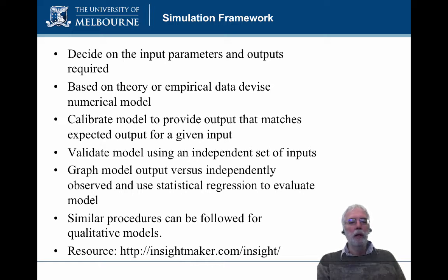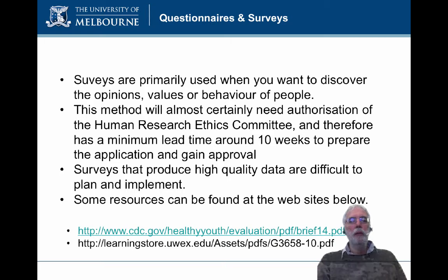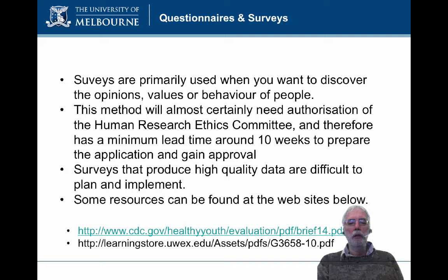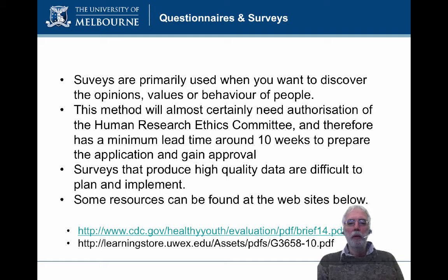Similar procedures can be followed for qualitative models in a simulation — these might be more thought experiments rather than numerical experiments. Have a look at the resource on InsightMaker for more information on simulation and an online platform for doing simulation. Questionnaires and surveys are often used when you want to discover the opinions, values, or behaviour of people. This method will almost certainly need authorisation of the Human Research Ethics Committee and therefore has a minimum lead time of around 10 weeks to prepare the application and gain approval. For this reason it is not normally a useful method for students doing a one-semester research project. Surveys that produce high quality data are difficult to plan and implement, so be prepared to spend quite a bit of time preparing your method and your survey. Some resources can be found at the websites below.